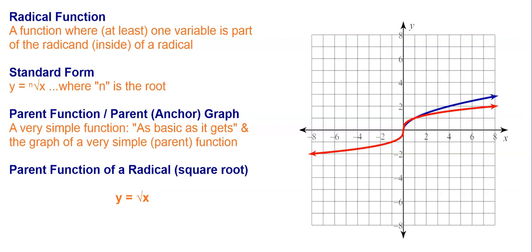For example, for a square root it would be 2, a cube root would be 3, etc. A very simple function — as basic as it gets — is called a parent function or parent graph. The parent function of a square root would just be y equals the square root of x. All those with even roots look like a half of a U on its side, like this blue line, whereas all those with odd roots are more like this curve, or this red line.